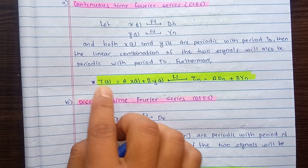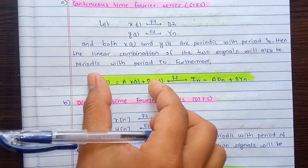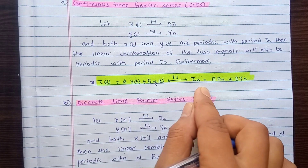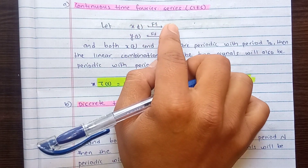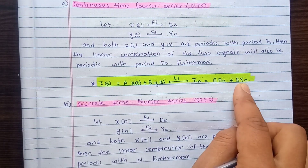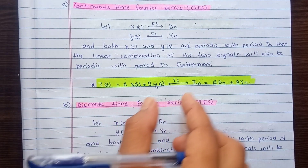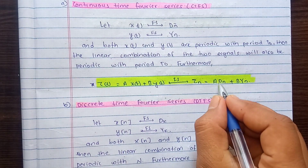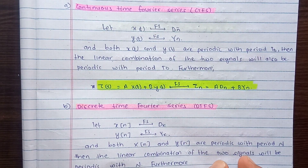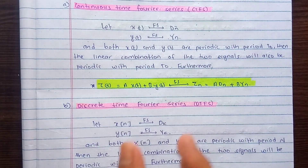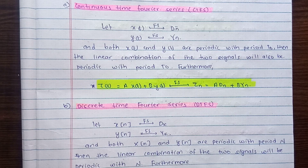If Xt and Yt form a linear combination A·Xt + B·Yt = Zt, then Zn — the Fourier Series representation of Zt — is also a linear combination of the individual outputs. This means if the input signals share the same period T0, the output is also periodic with that same period. This applies to the continuous time Fourier Series, and similarly for the discrete time Fourier Series.